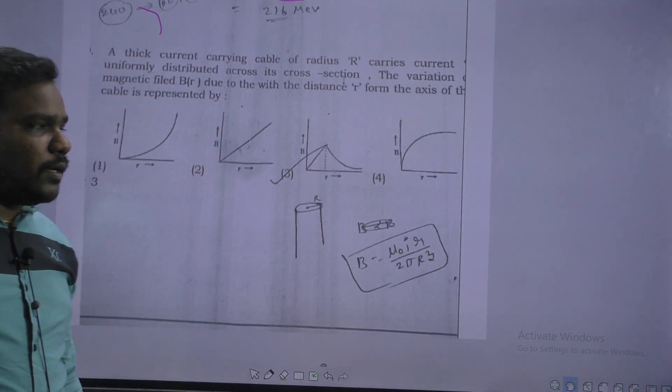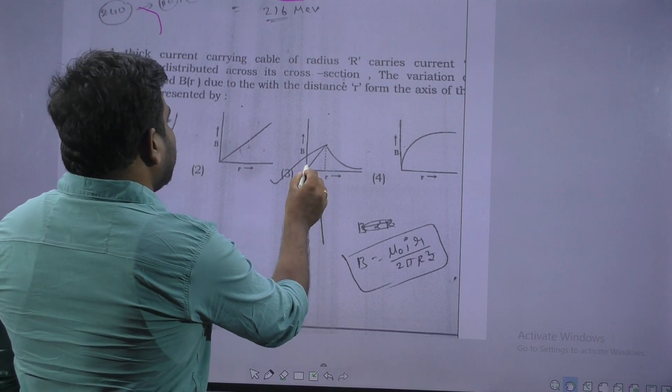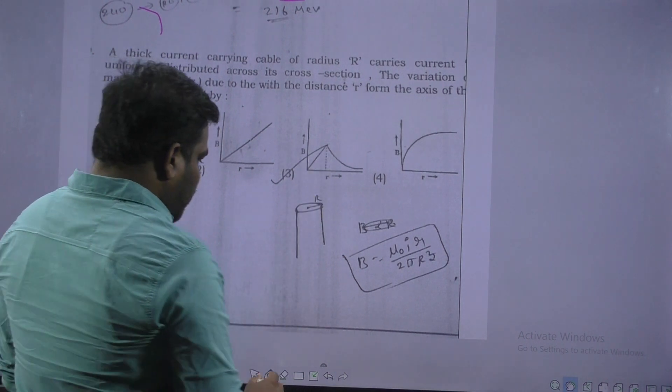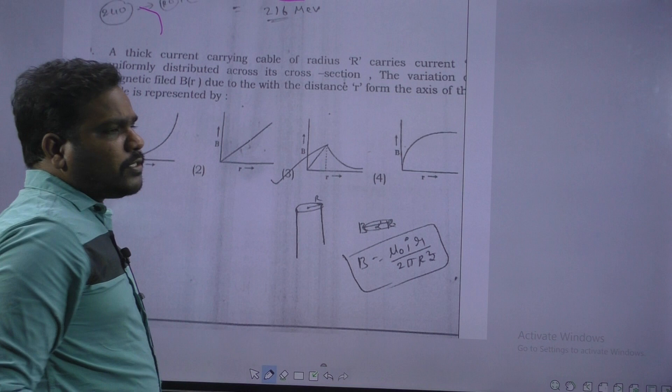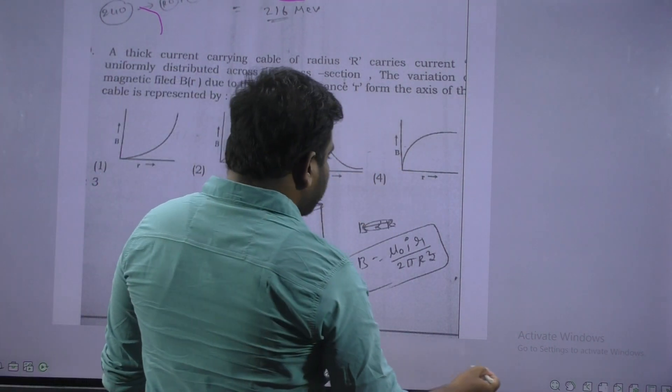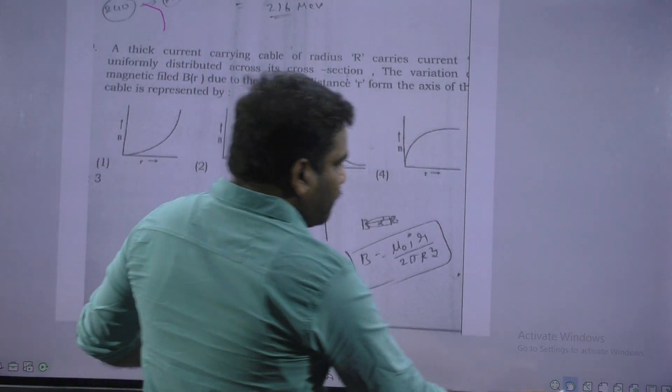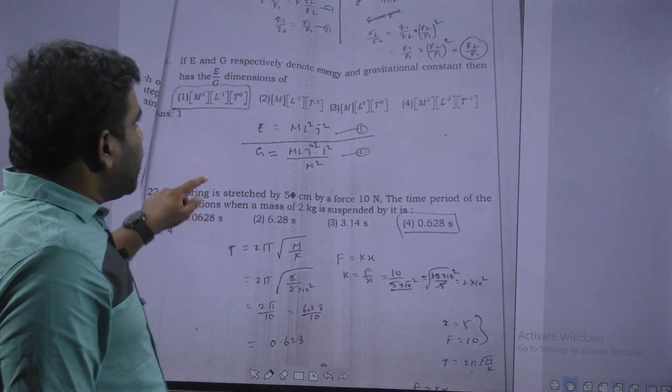Next. This is a wire, solid wire. We know magnetic induction change at center point is 0. And while increases to surface, after that surface will be inverse square. Option 3 is correct.